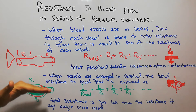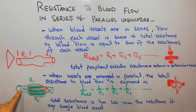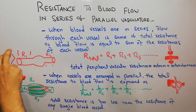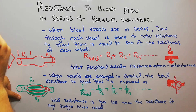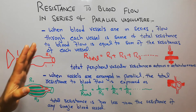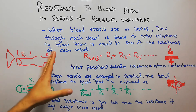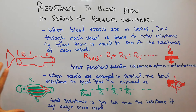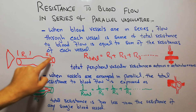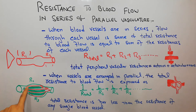The total resistance is much less in a parallel arrangement because the blood has many options — the whole blood is not going through a single vessel. In the series case, all the blood must go through vessel 1 and then through vessel 2. But in parallel, the blood gets divided into smaller portions, and each portion faces resistance only once in its own vessel, not the resistance of the other vessels.